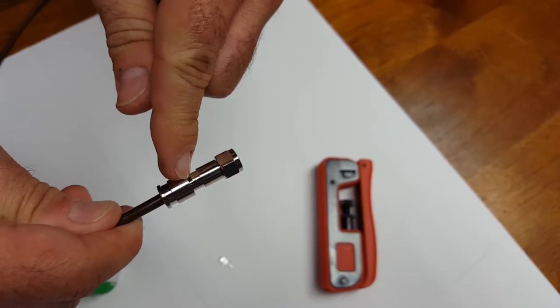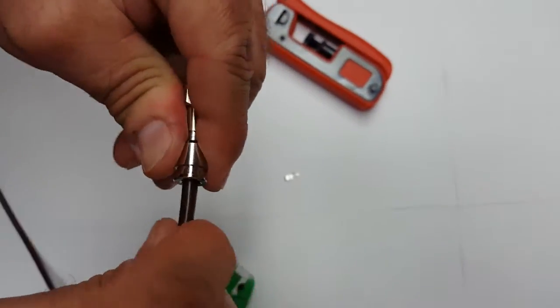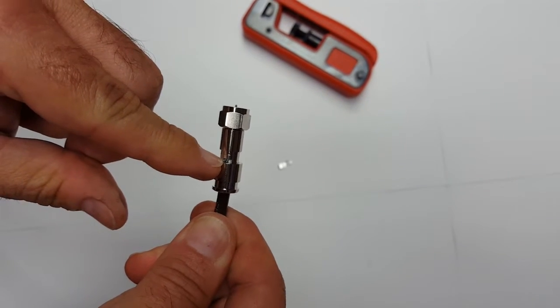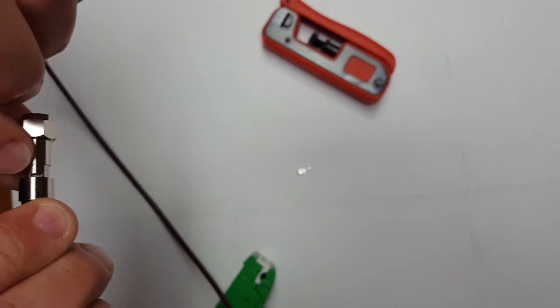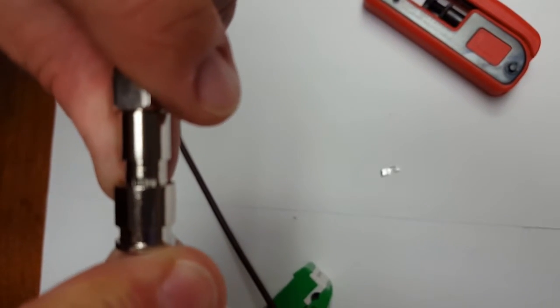Now there's a window here. Our connectors have a patented viewing window. That window will tell you when you fully seated the cable. So as you're pushing it up, you should see the jacket or the braid in the viewing window. There's a viewing window on both sides of the connector. So when you see that braid in the window, you know you fully seated it.